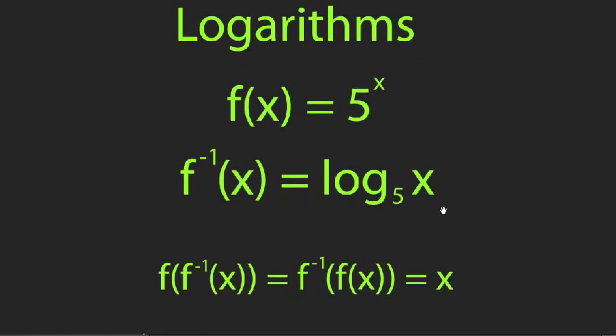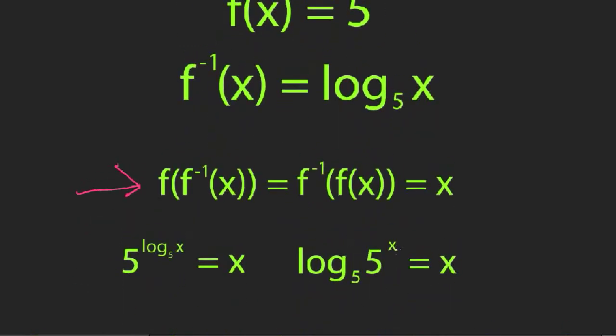For now, let's recognize that we know at least this much about logarithms: because it's an inverse function, we know that f of f inverse of x equals x as well as f inverse of f of x also equals x. So these cancel. That gives us the rules 5 raised to the log base 5 of x equals x or log base 5 of 5 to the x equals x. So these cancel is the point of that.